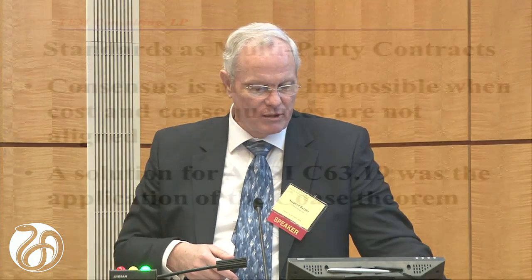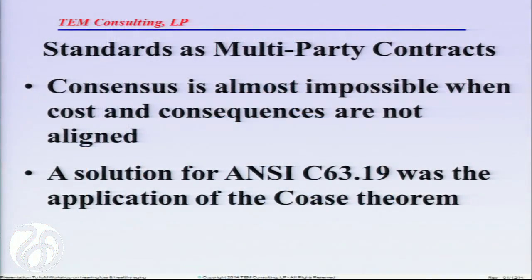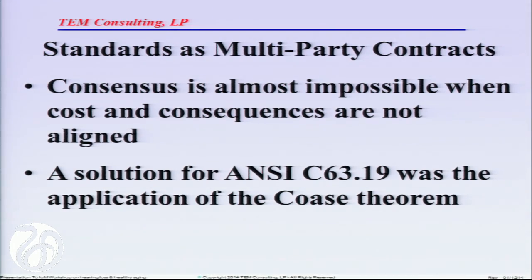Consensus is almost impossible when cost and consequences are not aligned. That is one of the lessons we have learned. It is worth thinking about because it is not unusual that if one industry would just pay a little bit more, someone else would get a benefit. How are you going to make that happen? Not easy.